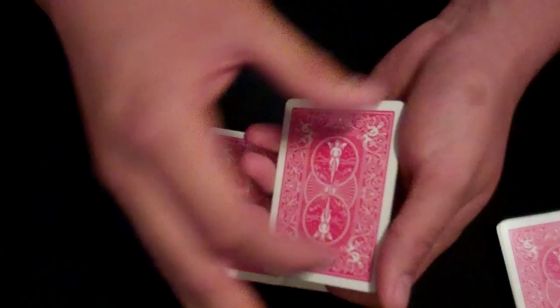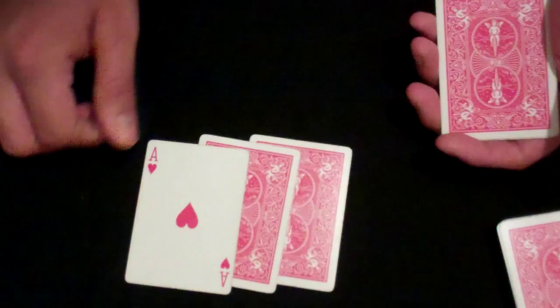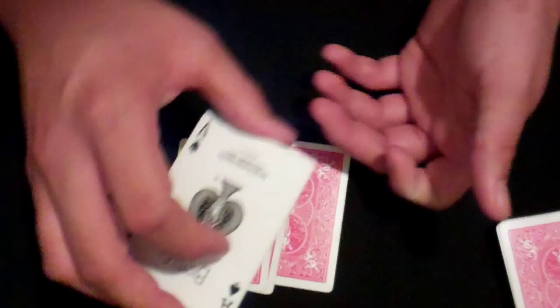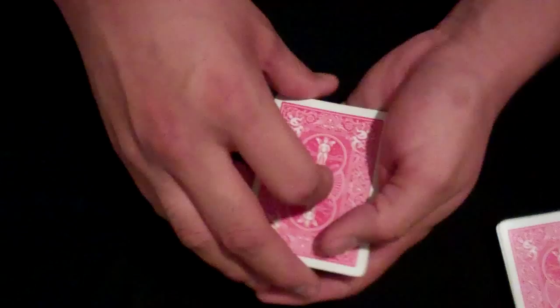So you'll do it again. Drop this card. Invisible palm. Set it down and say now using the invisible palm the ace of hearts joined the other two. So now they think there's only one card here. You set that on top.